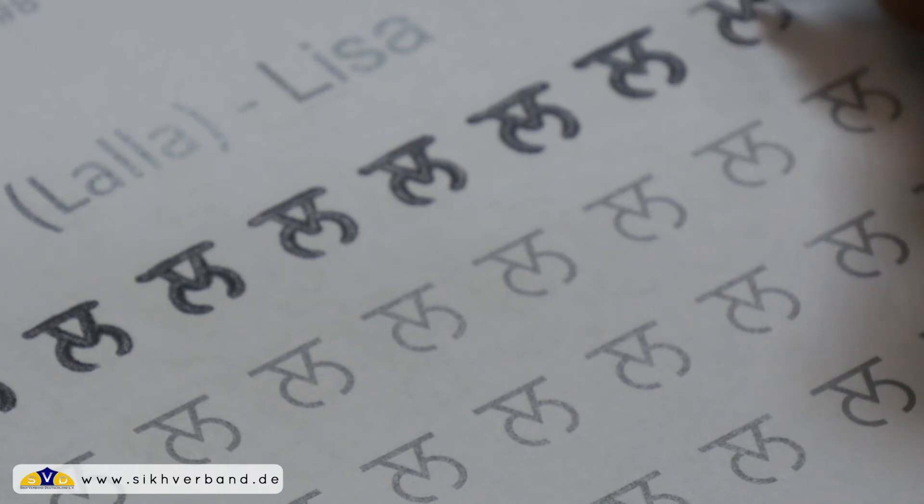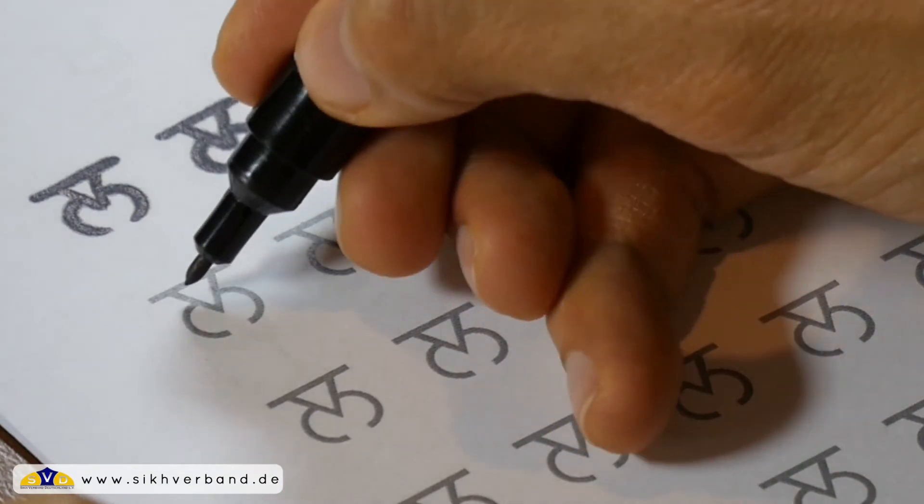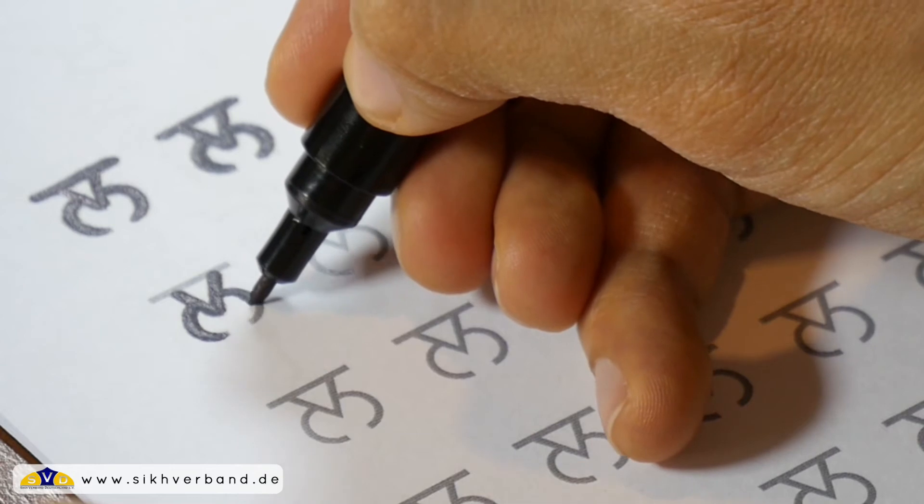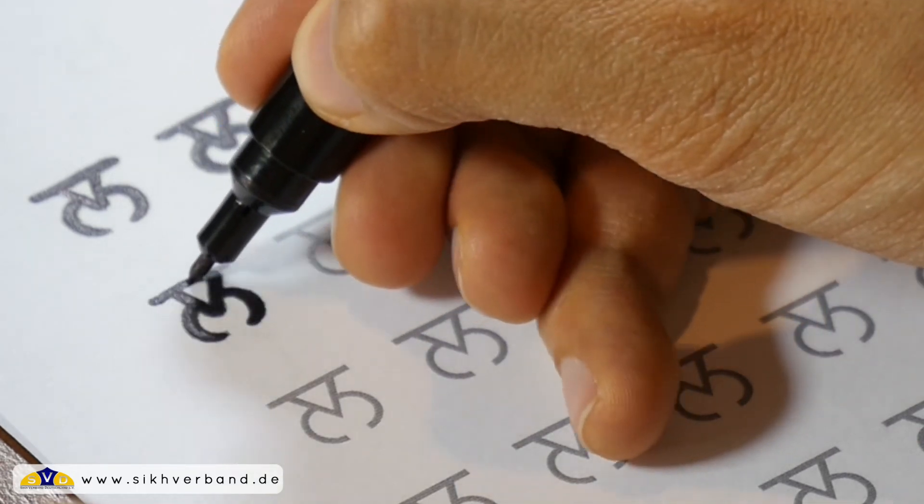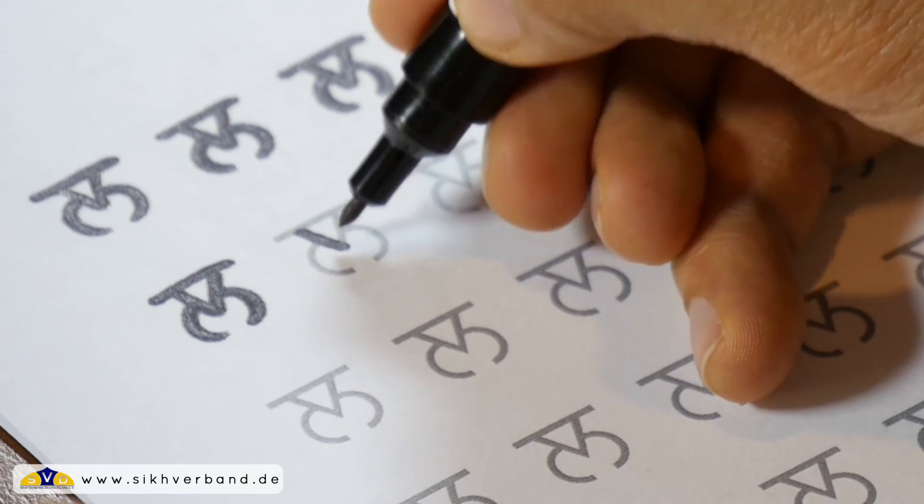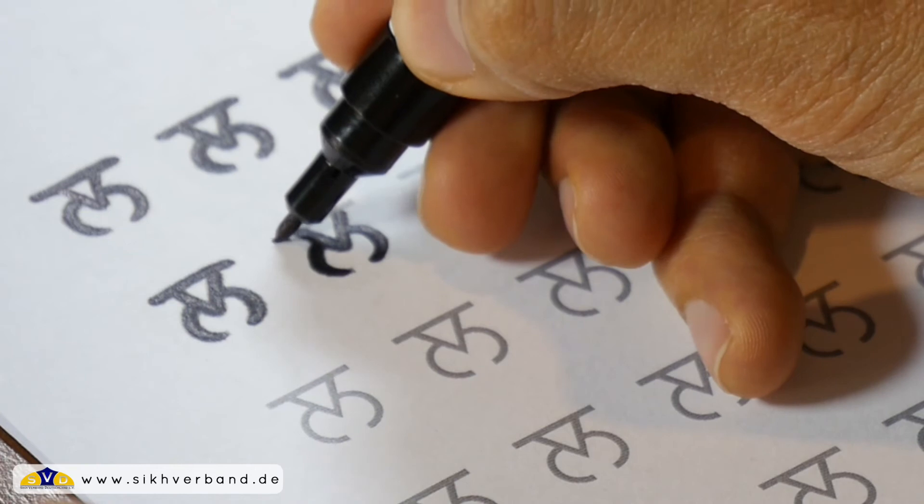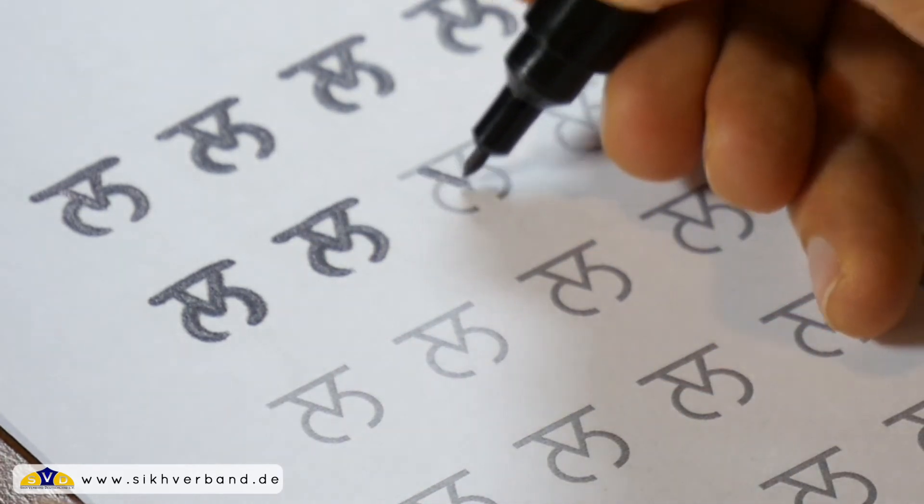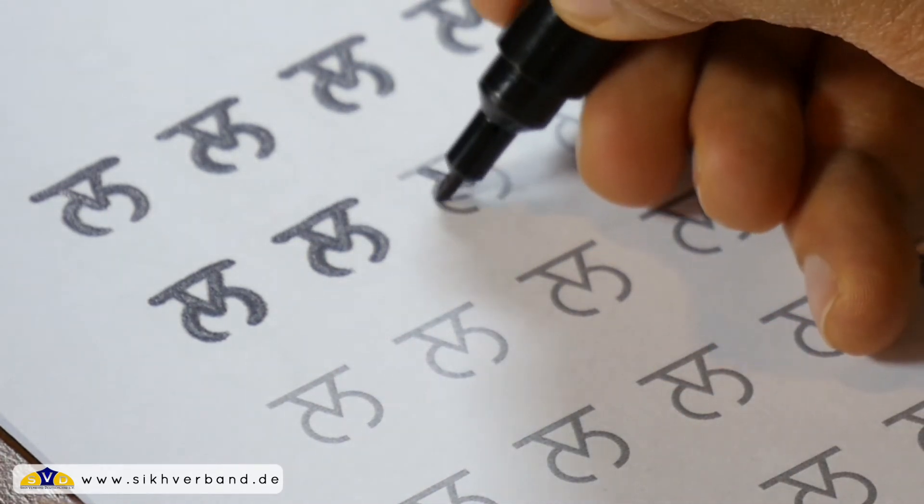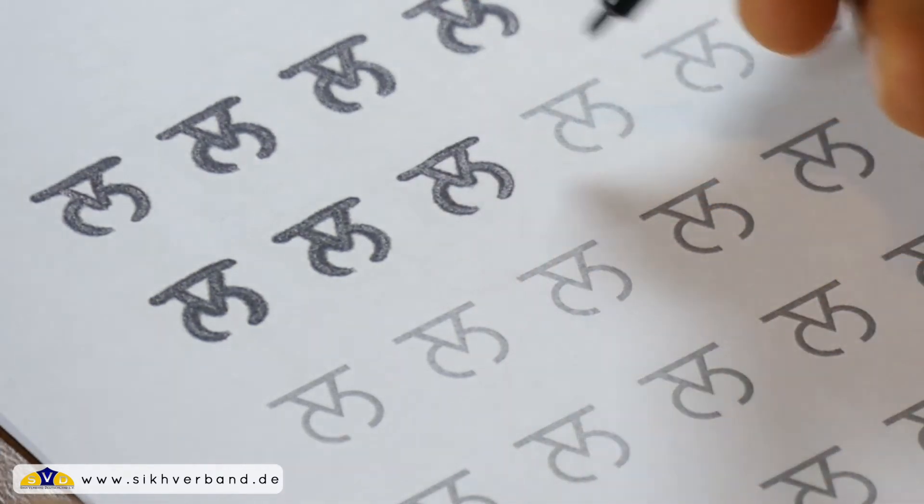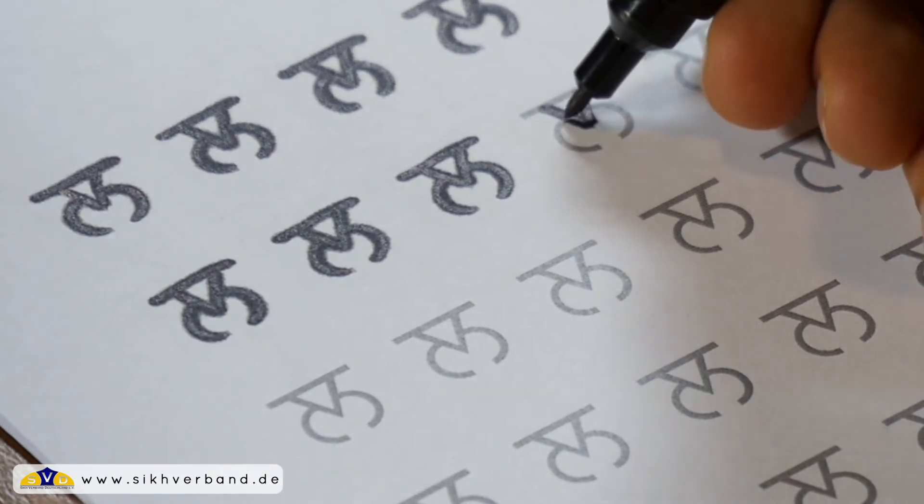Wie das L bei Luisa und L'Oreal zum Beispiel, oder bei Lisa, Ludwigsburg, Lalla, Limburg. Da fallen ja so viele Wörter ein. Das Dreieck, zwei Halbmonde. Lalla.